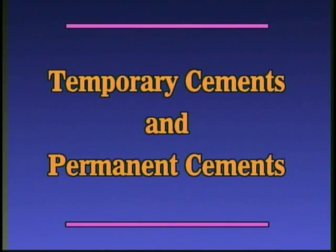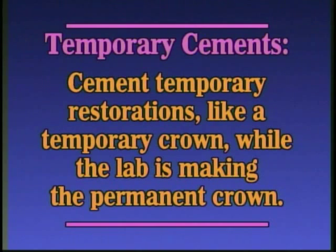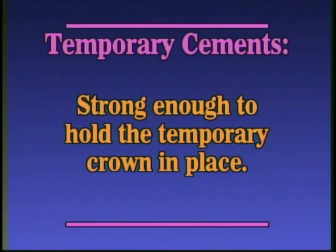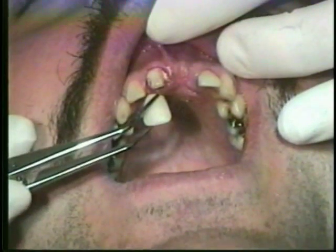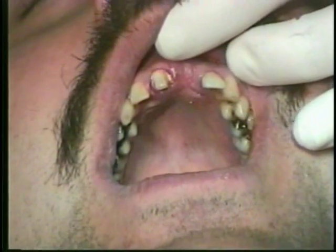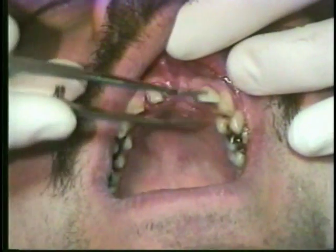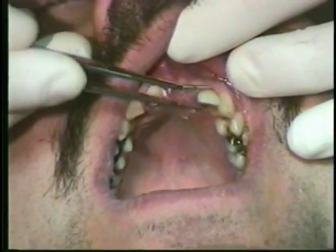The important thing to remember is that there are temporary cements and permanent cements. Temporary cements are used to cement temporary restorations, like a temporary crown, while the lab is making the permanent crown. Temporary cements are usually strong enough to hold the temporary crown in place, but still allow you to remove it easily without hurting the patient when you need to cement the permanent crown.